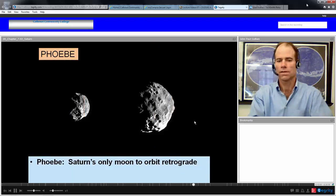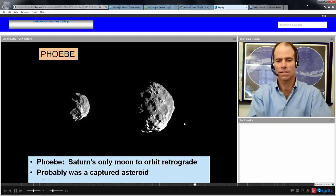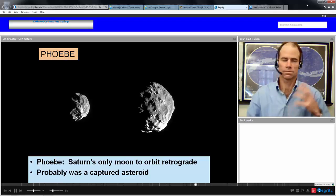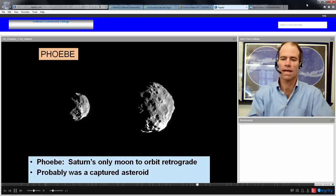Here's Phoebe. Phoebe is Saturn's only moon to orbit retrograde. As you look at Phoebe, it kind of looks like an asteroid, so it probably was a captured asteroid. Most of the moons are going prograde. The one moon going the opposite direction probably was captured after formation sometime later as a captured asteroid.